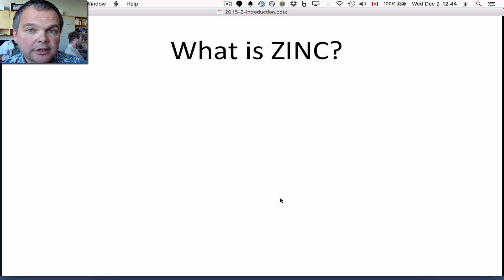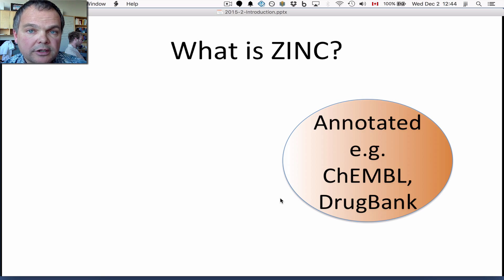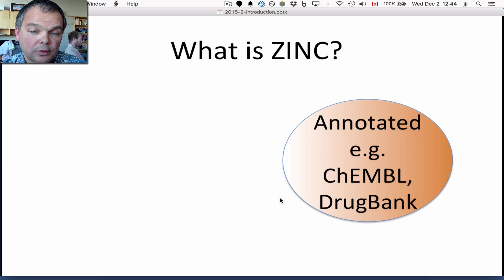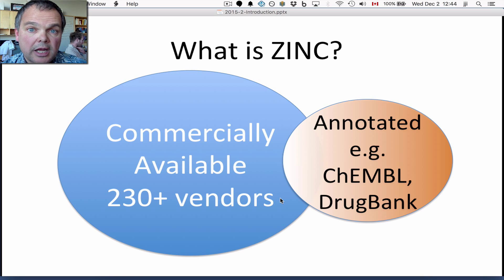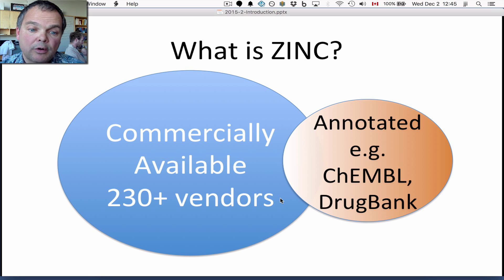Let's start with a little bit of background about Zinc. What is Zinc? Well, Zinc contains annotated compounds such as those found in the medicinal chemistry literature and represented in the ChEMBL database and/or DrugBank, HMDB, traditional medicine databases, and it intersects them with commercially available compounds which we get from commercial suppliers. There are now over 230 vendors in Zinc representing more than 100 million molecules that you can simply purchase.